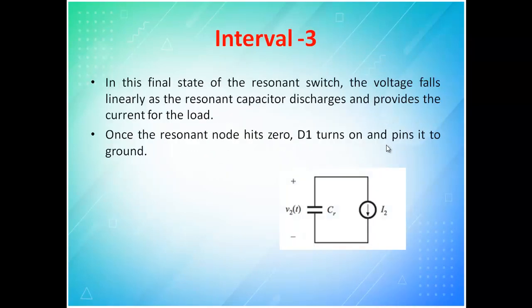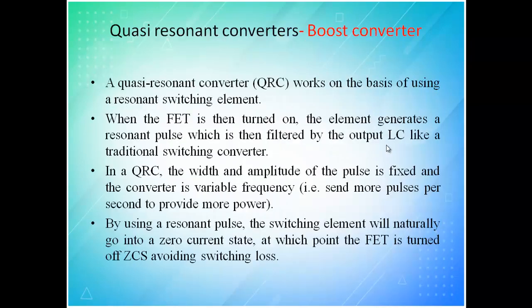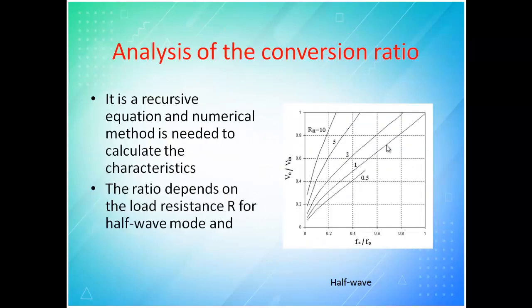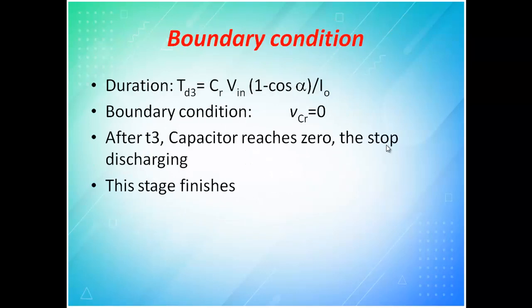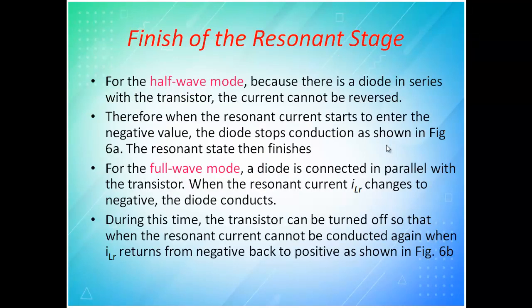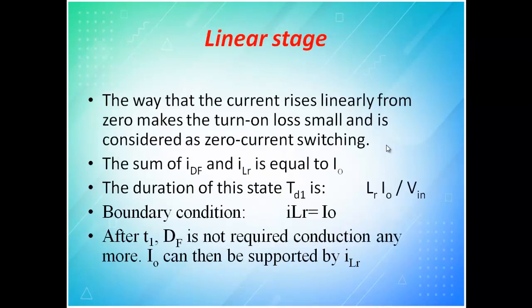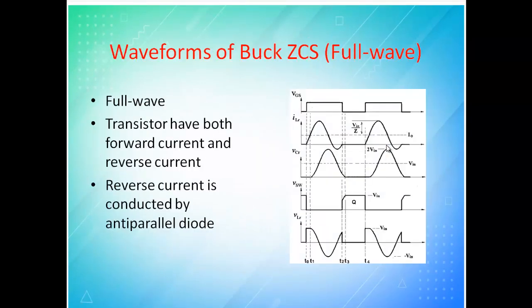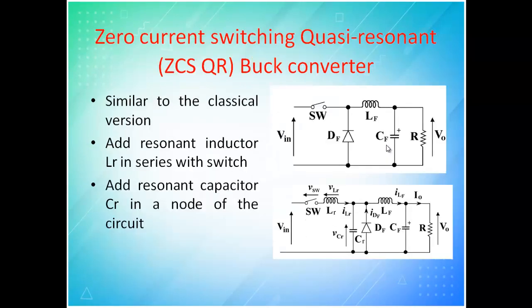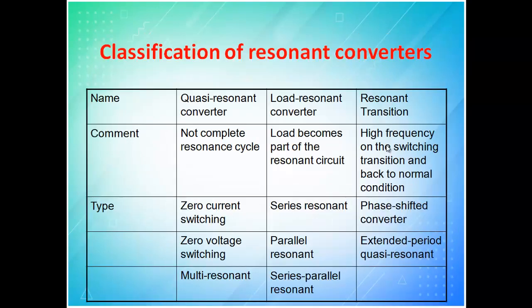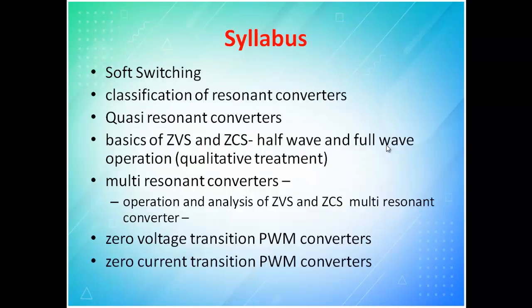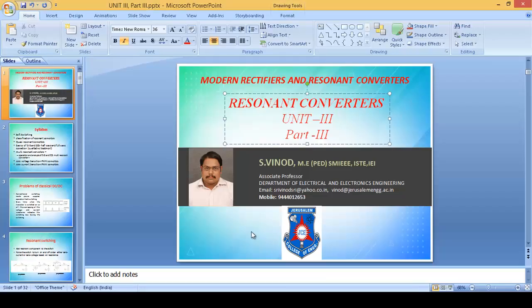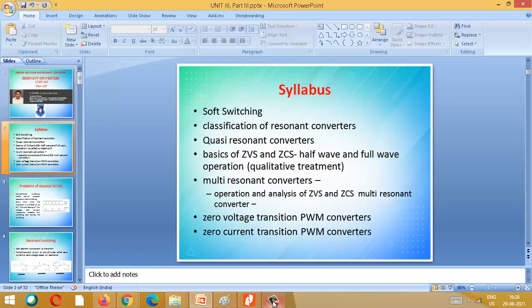If quasi resonance is so good, why is multi-resonance the next topic? As an assignment for this weekend, identify what the problem is with quasi resonance and how that problem is overcome by the multi-resonance converter. That is the topic for the next class. That's all for today.